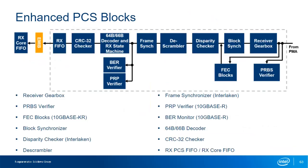The Enhanced PCS receiver path contains the PRBS verifier, RX gearbox, block synchronizer, FEC blocks, disparity checker, descrambler, frame synchronizer, PRP verifier, BER verifier, 64B-66B decoder, CRC32 checker, RX PCS FIFO, and RX Core FIFO. Like the transmitter, not all blocks are required for all protocols, so they can be enabled and disabled as needed. The PRBS verifier in the Enhanced PCS is the same block as in the Standard PCS with the same features and supported patterns.